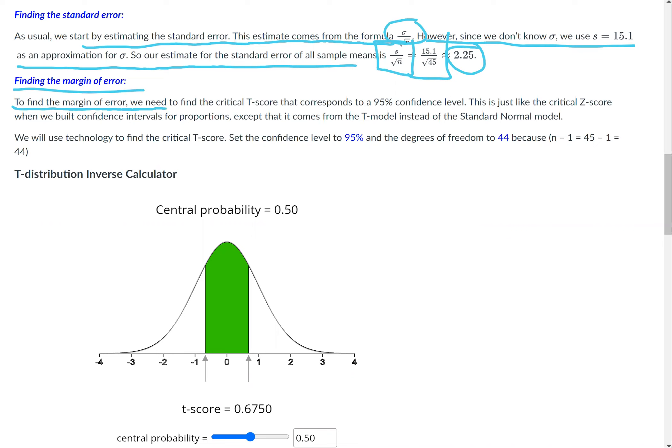Now we'll find the margin of error. To find the margin of error, we need to find the critical t-score that corresponds to a 95% confidence level. This is just like the critical z-score when we built confidence intervals for proportions, except it comes from the t-model instead of the standard normal model.